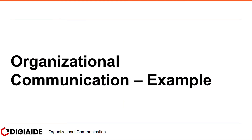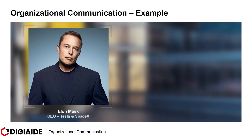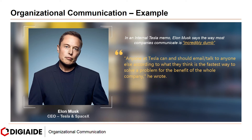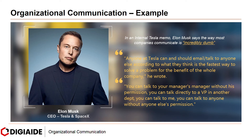Now let's look at an example of organizational communication — Tesla and Elon Musk. In an internal Tesla memo, Elon Musk says the way most companies communicate is incredibly dumb. In an email published by Ink's Justin Barriso, Musk inspires employees to buck the outdated chain of command in which messages always run through managers. As stated by Musk, anyone in Tesla can and should email or talk to anyone else according to what they think is the fastest way to solve a problem for the benefit of the whole company. You can talk to your manager's manager without his permission, directly to a VP in another department, or even to Musk himself — without anyone else's permission.